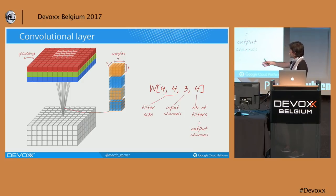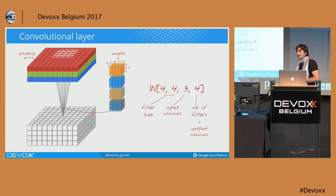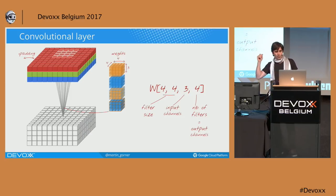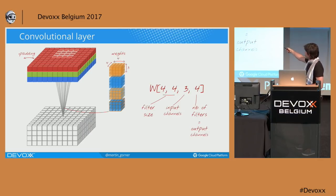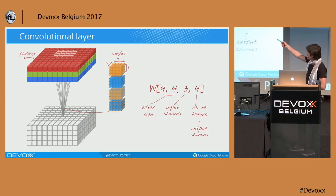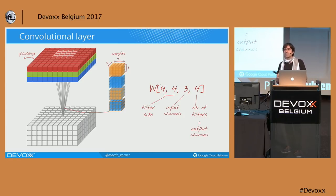Convolutional layers are transformations between data cubes: one data cube transformed into another. As computer engineers, I want you to know exactly how many weights are created for each convolutional layer. The formula is: filter size (4 by 4) times the number of input channels (3 for an RGB picture — 3 pieces of information per pixel) times the number of output planes. The last number is how many times you do this, which also means how many planes of data you get as output.